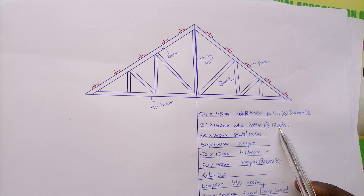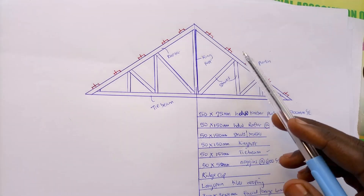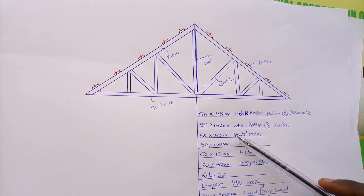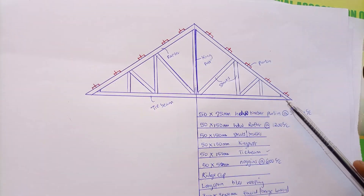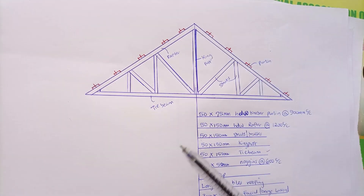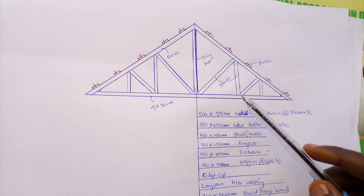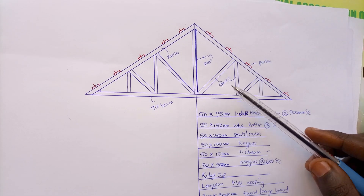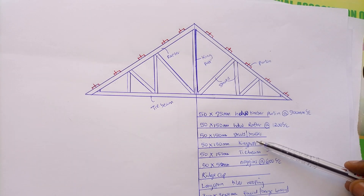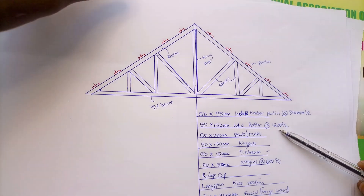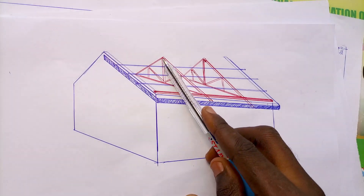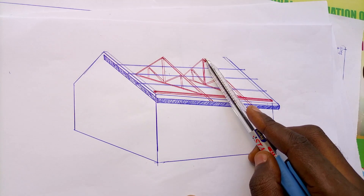We also have 50 by 150mm hardwood rafter at 1200mm center to center. The spacing for rafters is not always shown in the truss drawing itself — only the rafter shape is represented in the truss. The spacing for rafters, struts, king post, and tie beam are always the same. That is why there is no need to indicate 1200 center to center separately for those elements.